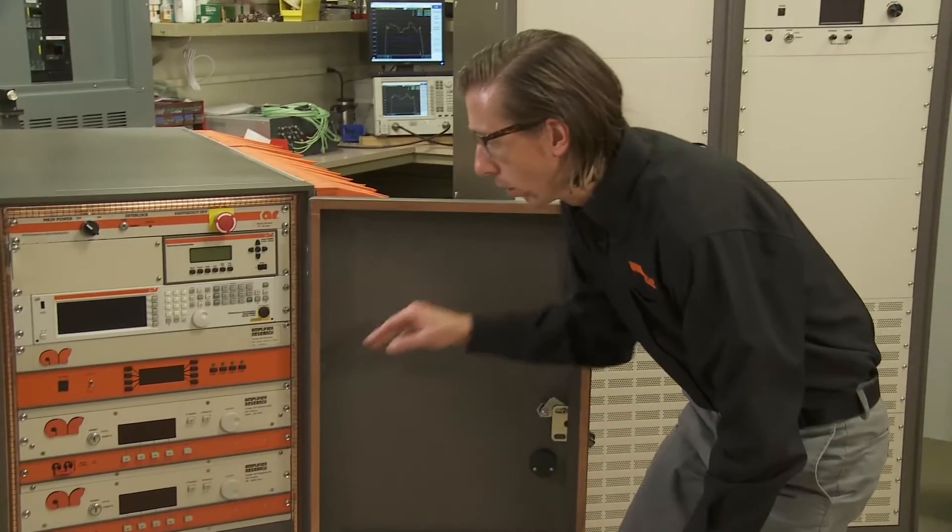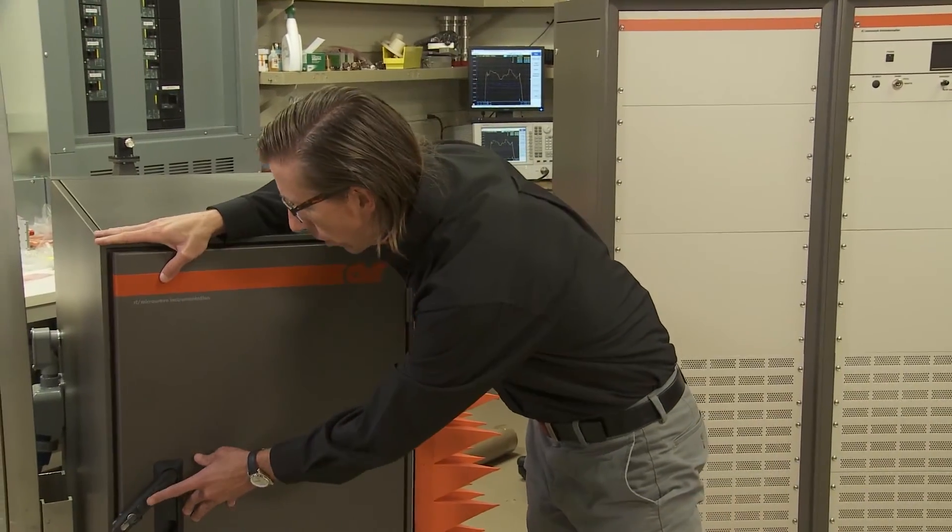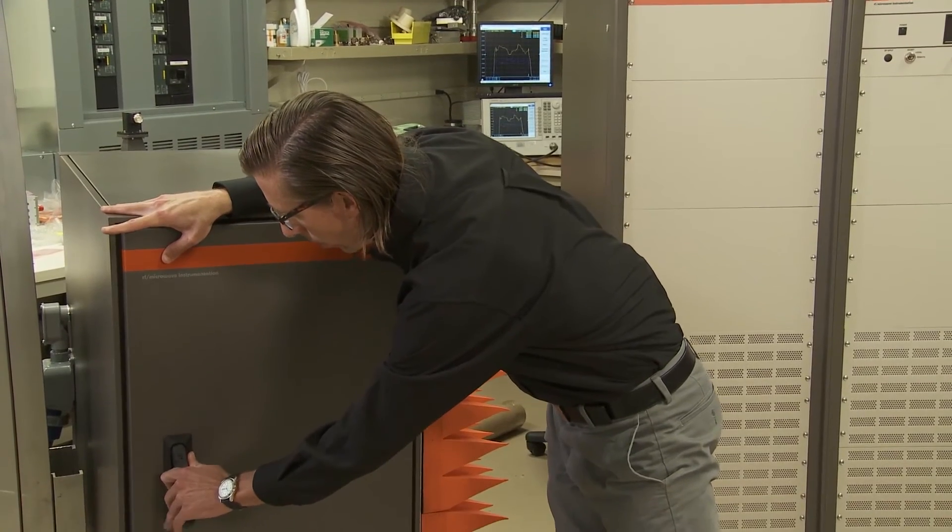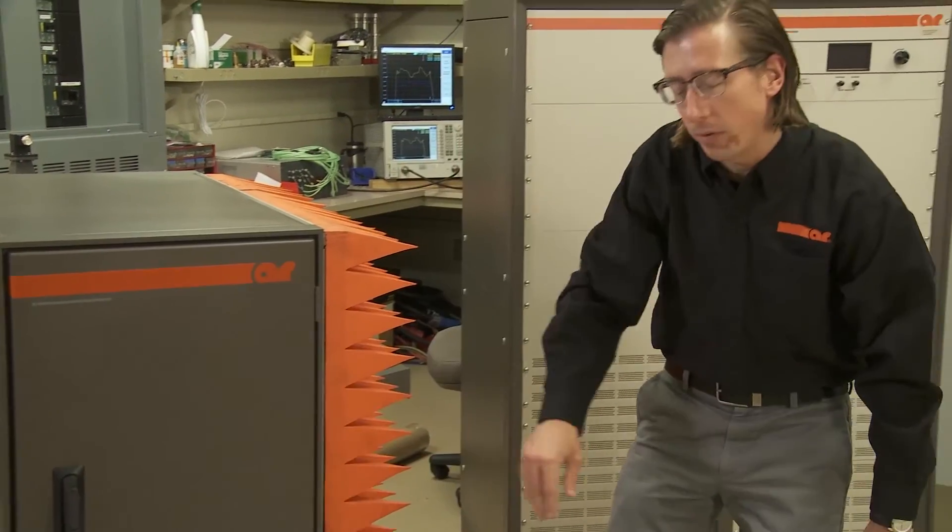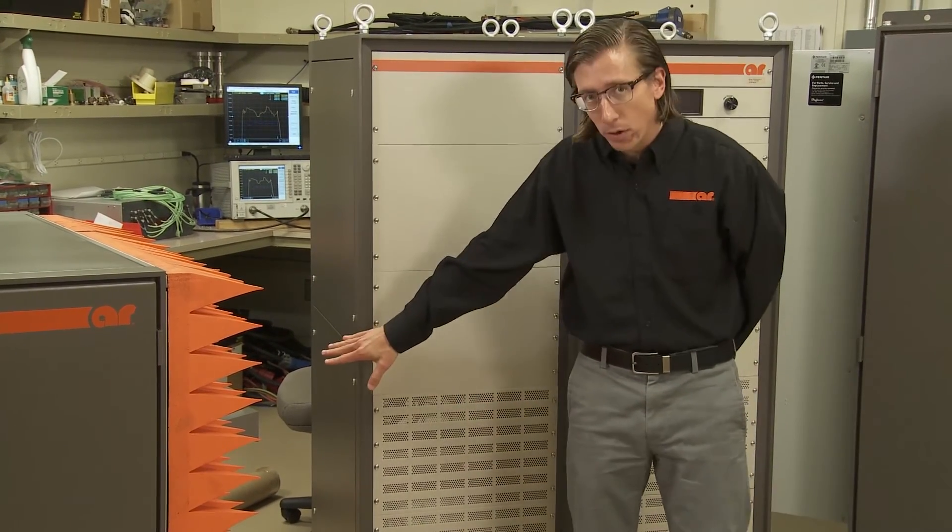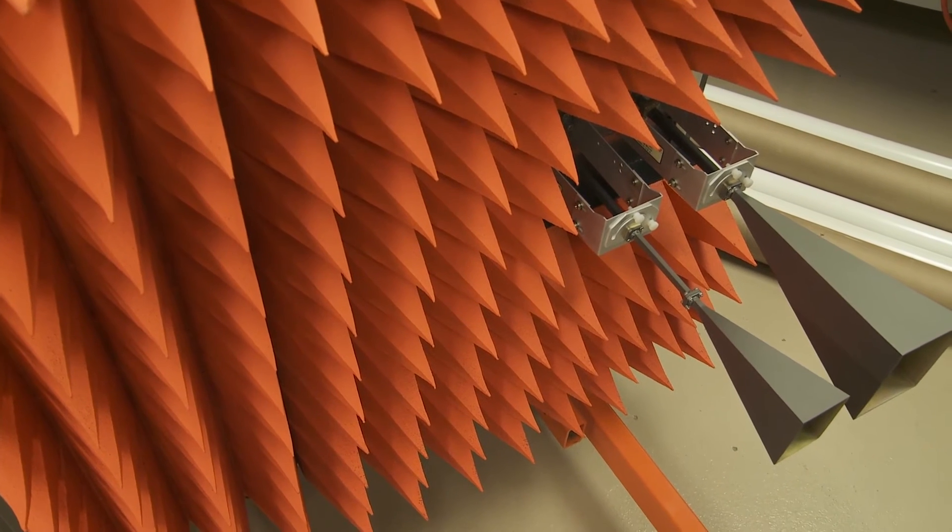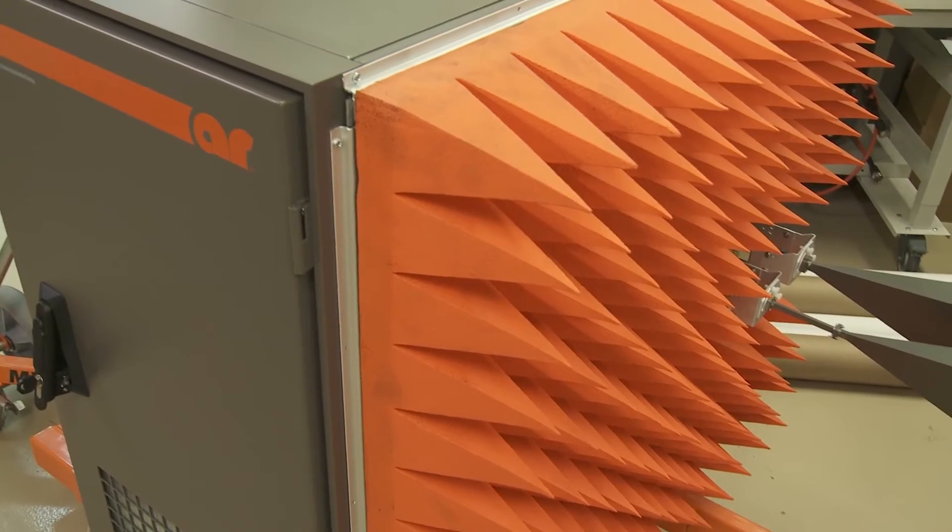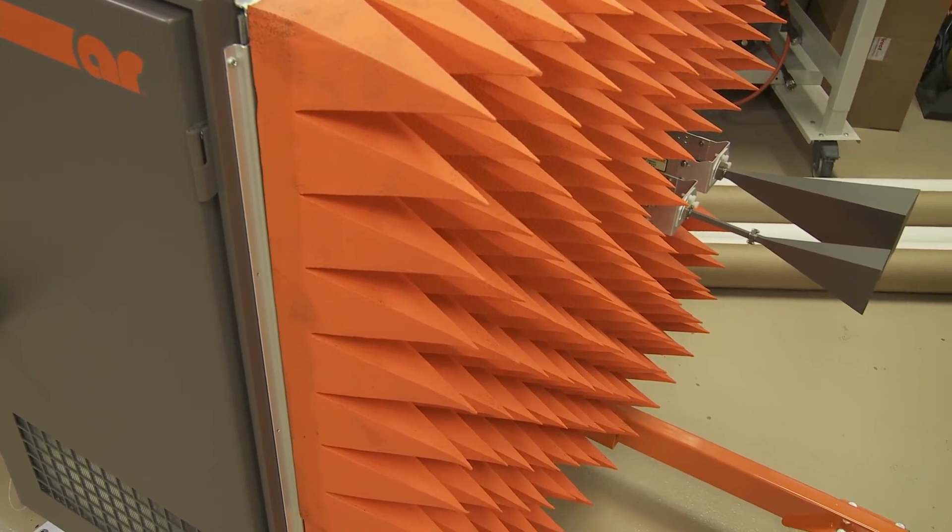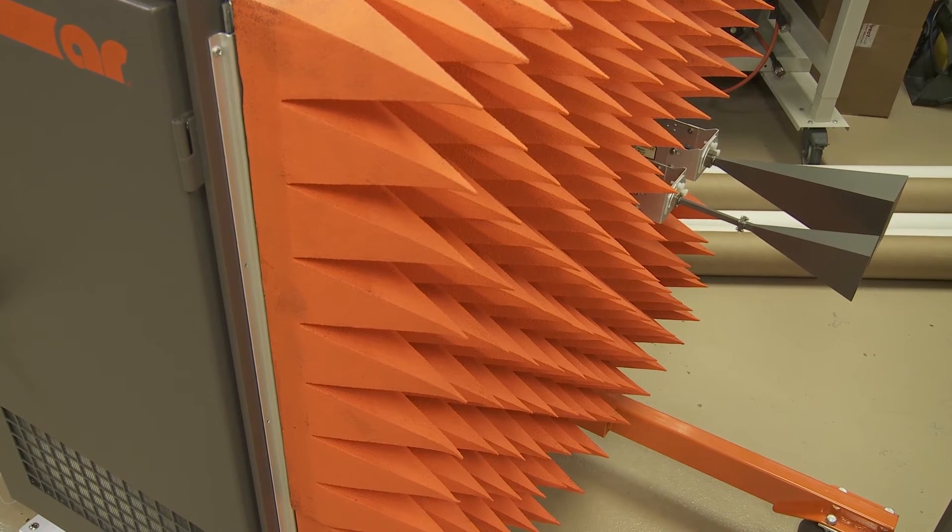Similarly to the 1 to 18 gigahertz system, we want to minimize all losses between the amplifiers and antennas. To do that, we have mounted our antennas directly on the rack itself. Additionally, we cover the side of the rack with anechoic material to minimize any reflections or unwanted effects provided from the field generation.